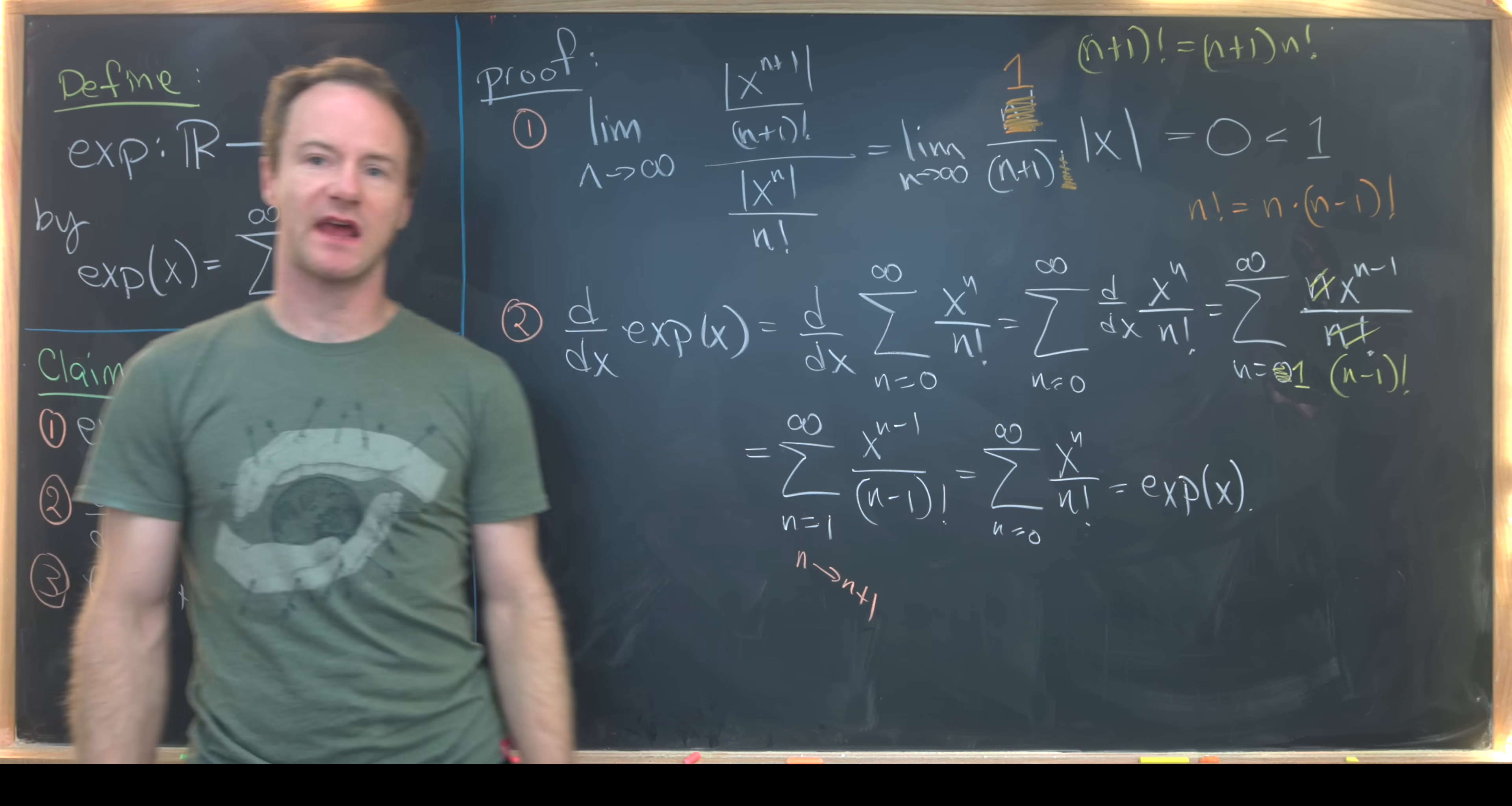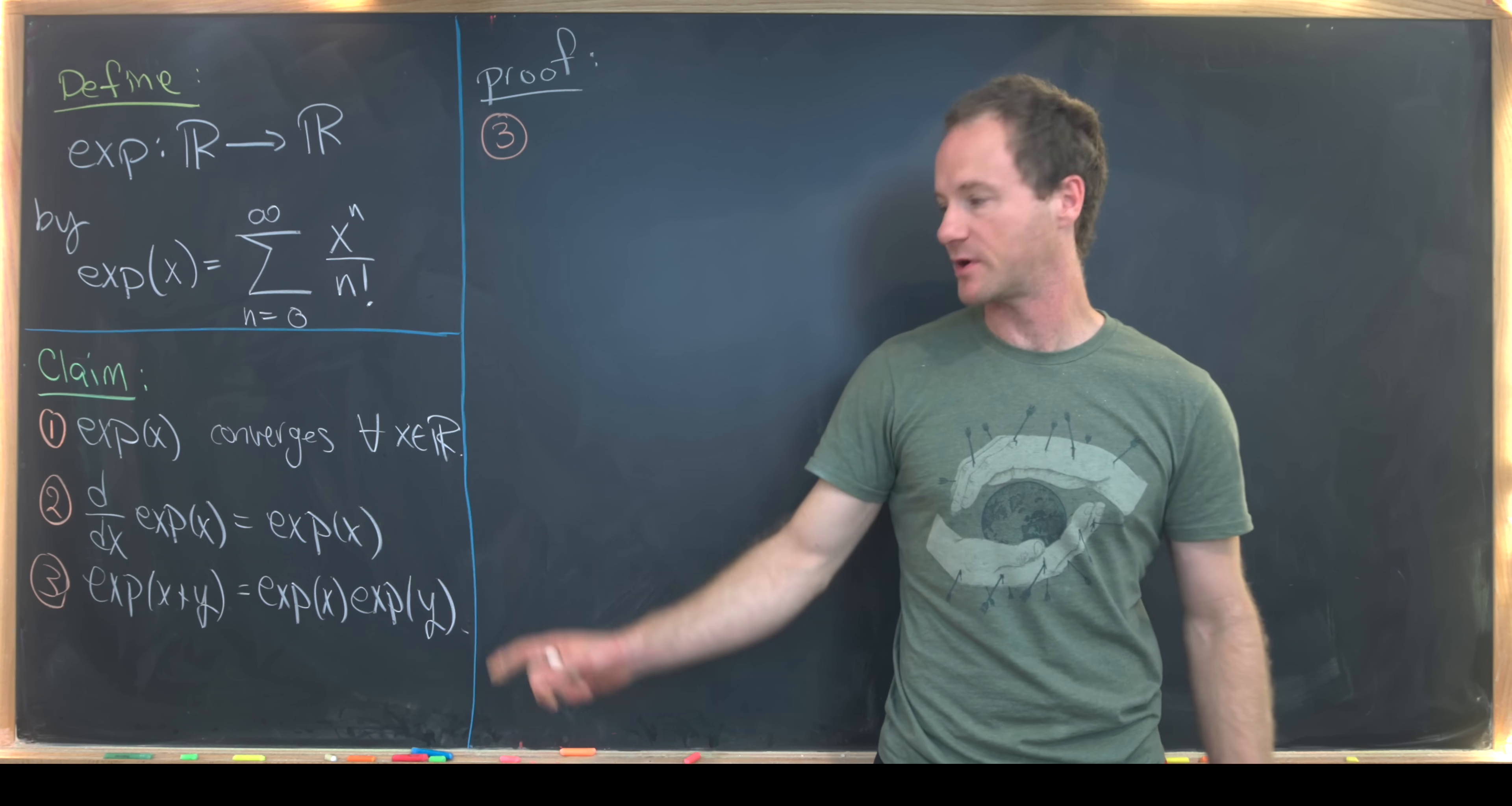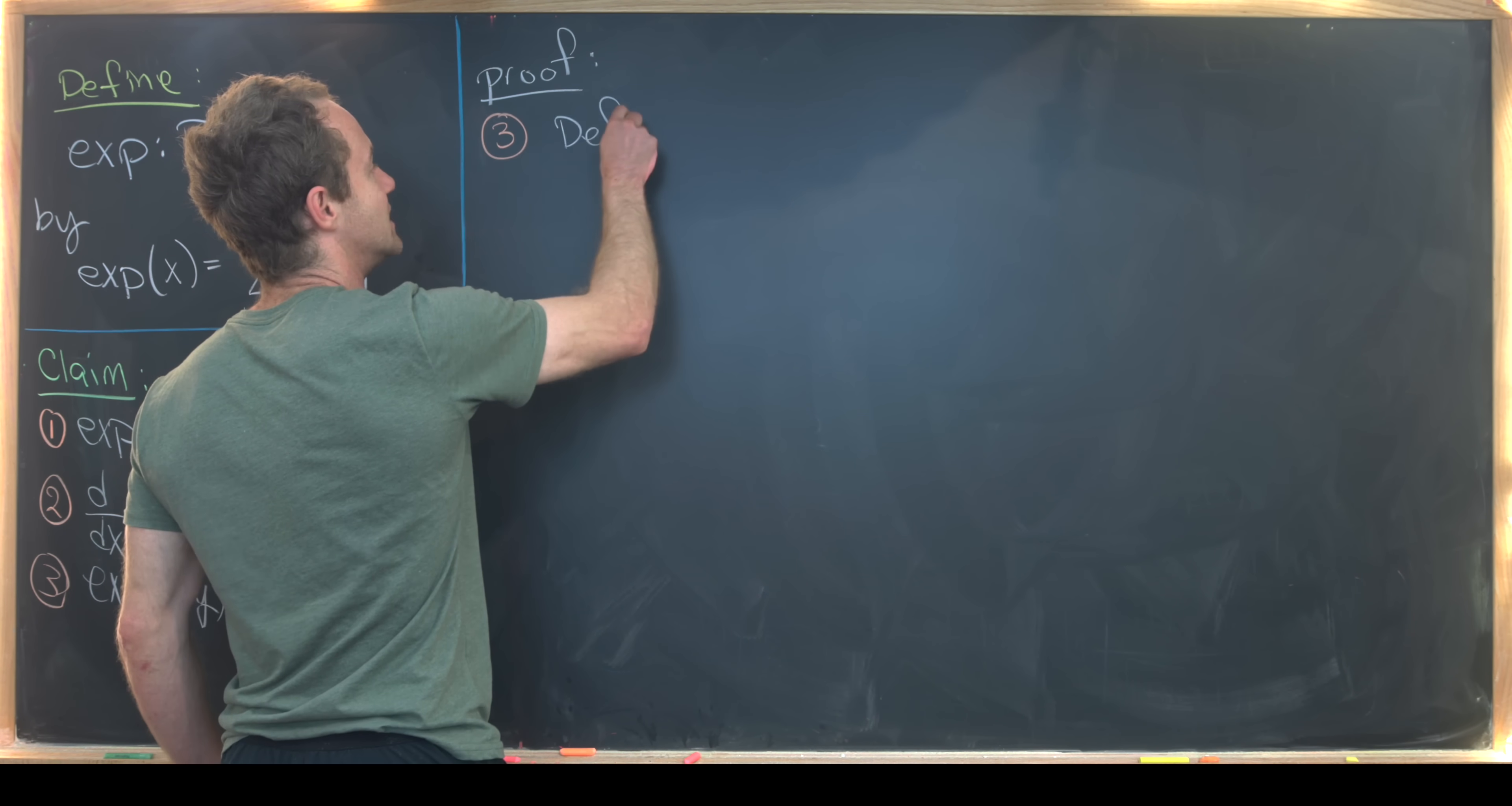So let's maybe get rid of this and we'll look at the most interesting property which follows from our definition, which is this multiplication addition property. We just got done proving these first two properties. Now we're ready to look at this third. And this third will hinge on the fact that we already know the second.